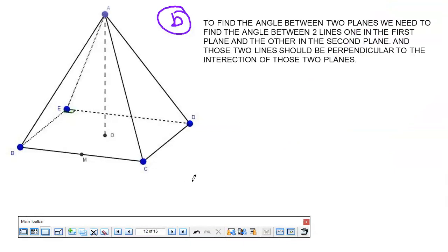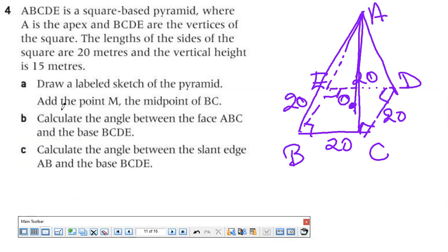I drew it on GeoGebra, it's much more clear. BCDE is a square. From here to here is 20, and in real life all sides are 20. Here I have AO, which is 15 meters - the vertical height. M is the midpoint of BC. The first question is to draw a labeled sketch of the pyramid. We did it, and you put M the midpoint of BC.